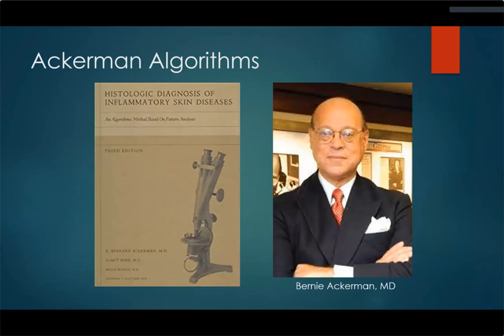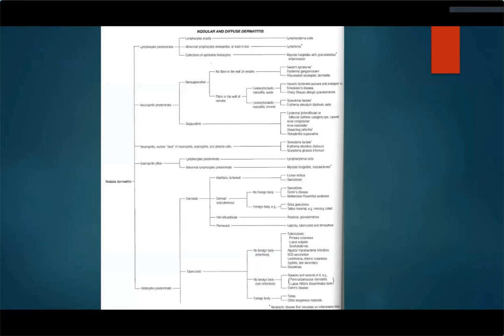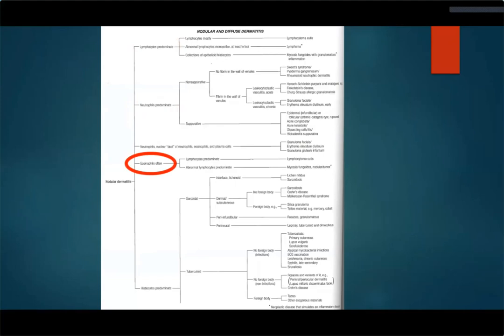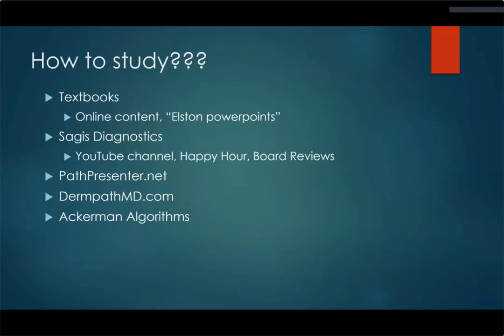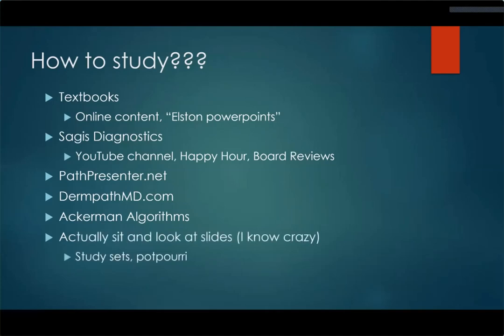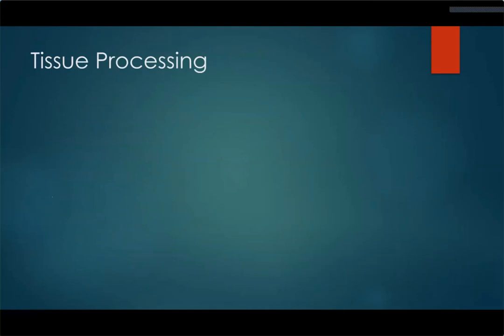Dr. Ackerman was also a staunch advocate for medical ethics and was an expert witness at over 200 trials. This picture shows one of the algorithms from his textbook. You come to the microscope, you see a nodular and diffuse dermatitis — inflammatory cells all over the place — and you pull up this page and ask: are there mostly lymphocytes, neutrophils, eosinophils, or histiocytes? And then you go down the algorithm from there. That can be a pretty specific way to get to a diagnosis. Certainly I would also recommend sitting and looking at lots of slides, study sets, and going through potpourri unknowns.